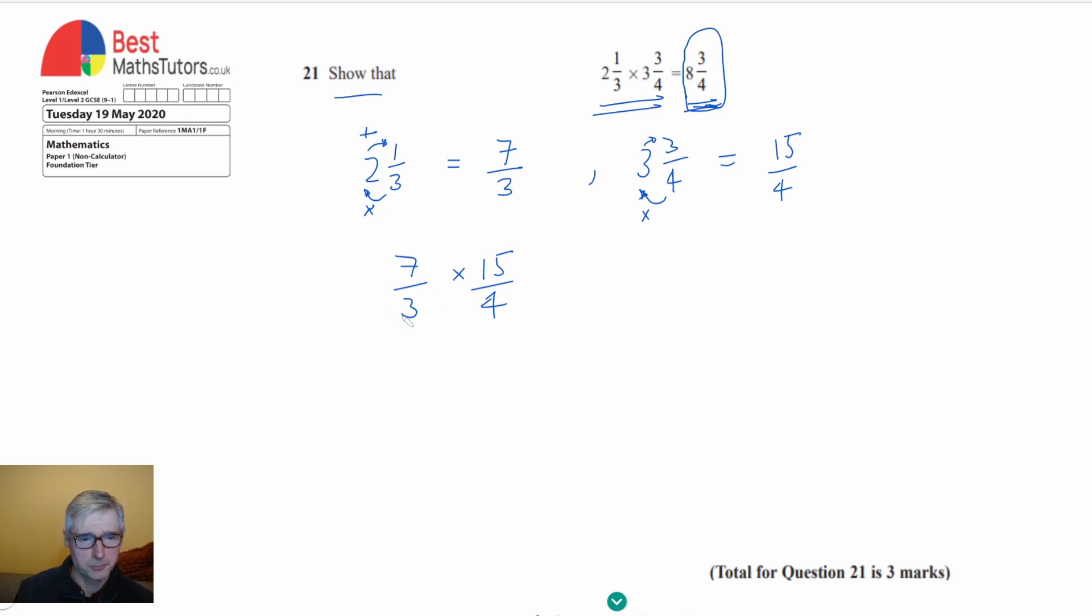So for example we can see we've got 3 here. And because 3 goes into 15, I can actually divide that by 3 and that will give me 1. And I can divide that by 3 and that will give me 5. So now if I multiply straight across what I've got is 7 times 5 will give me 35. And that's over 4 because 1 times 4 is just 4.